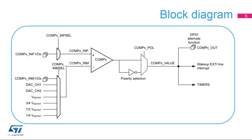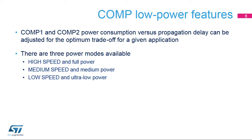This slide shows the general block diagram of the comparator integrated in the device. The comparator's power consumption can be adjusted to have the optimum trade-off between speed and energy efficiency for a given application. There are three modes available: high-speed, medium-speed, and ultra-low-power. The high-speed mode would be preferred for power conversion applications such as motor control, while ultra-low-power mode would be the right choice for battery-powered applications where reaction times are not critical, for example in PIR sensor monitoring.